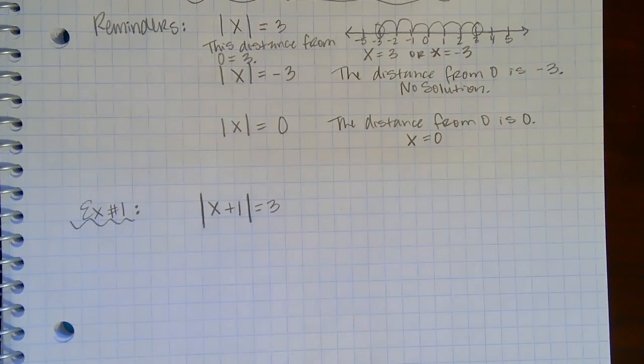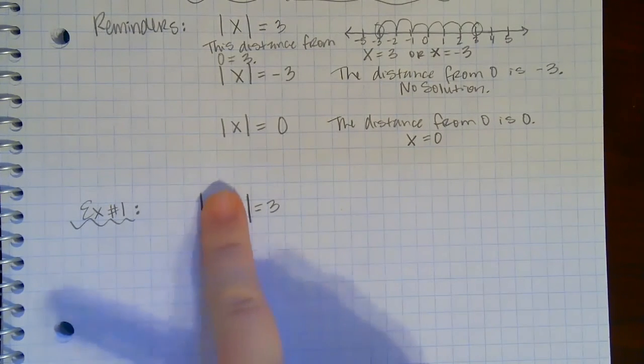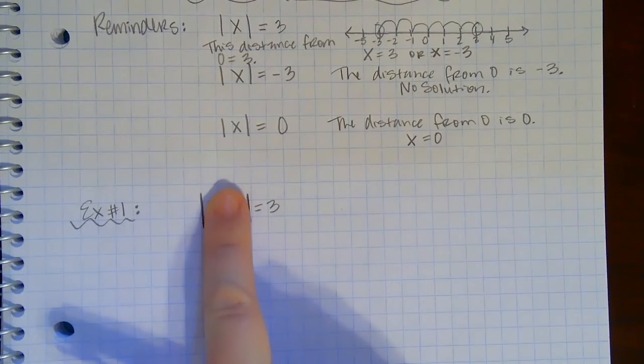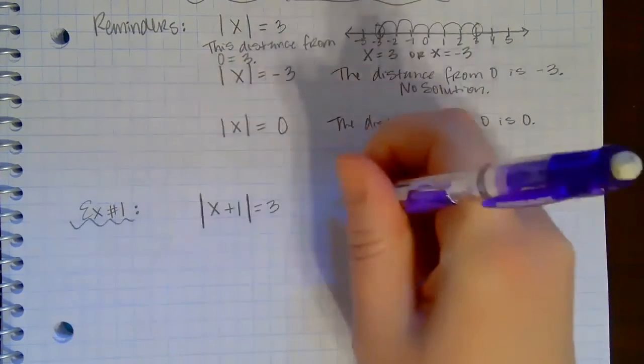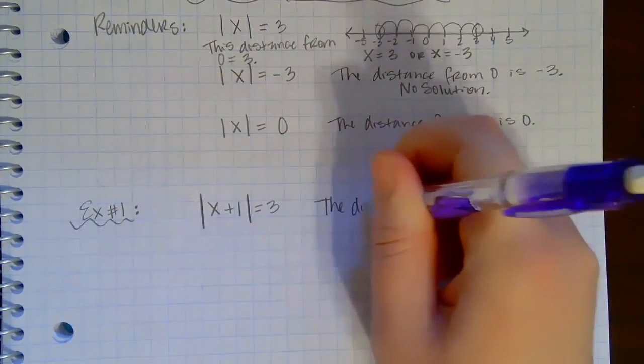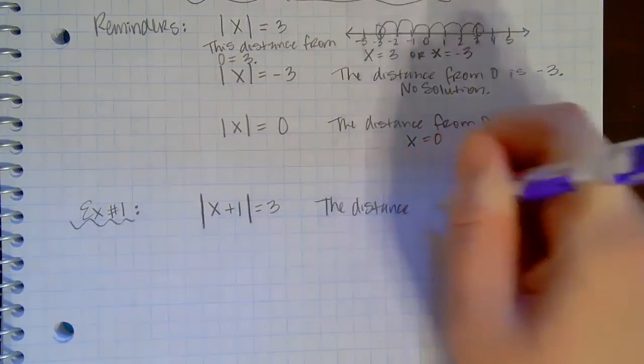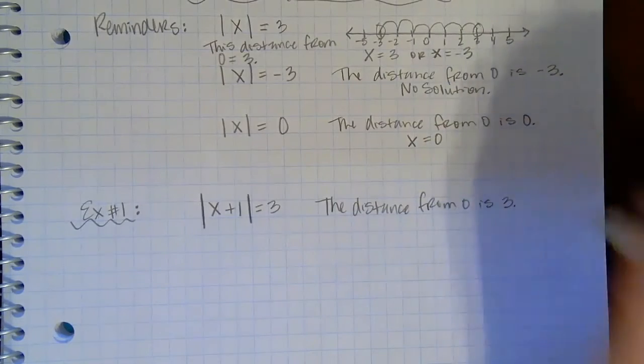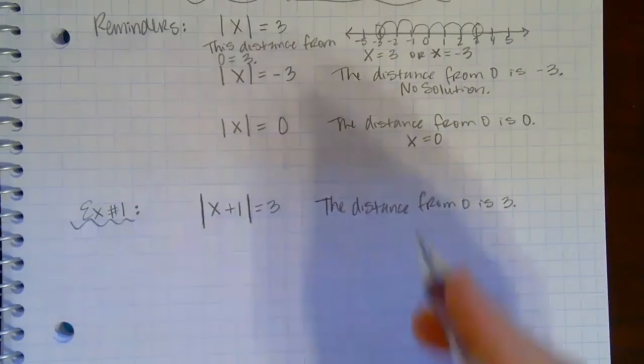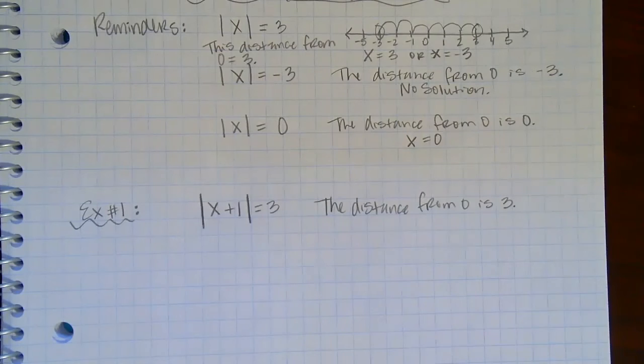Okay, so the first thing I'm going to do is I'm just going to ignore this x plus 1 part; that doesn't matter yet. I just want to think back to what we did yesterday. So it says the absolute value is 3. That means that the distance from 0 is 3, which we know could possibly be a positive 3 or a negative 3.